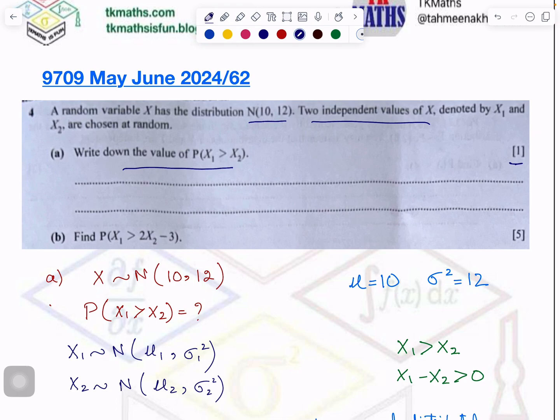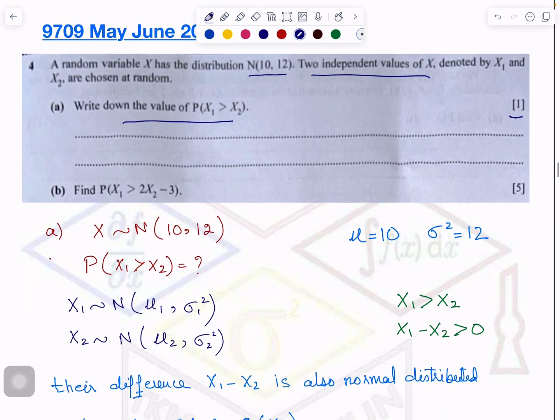So the working I am showing you here is basically to explain to you the concept. The meaning of this question is basically you have to calculate this probability. And when you rearrange this, it is X1 minus X2. Basically they are from the same normal distribution.